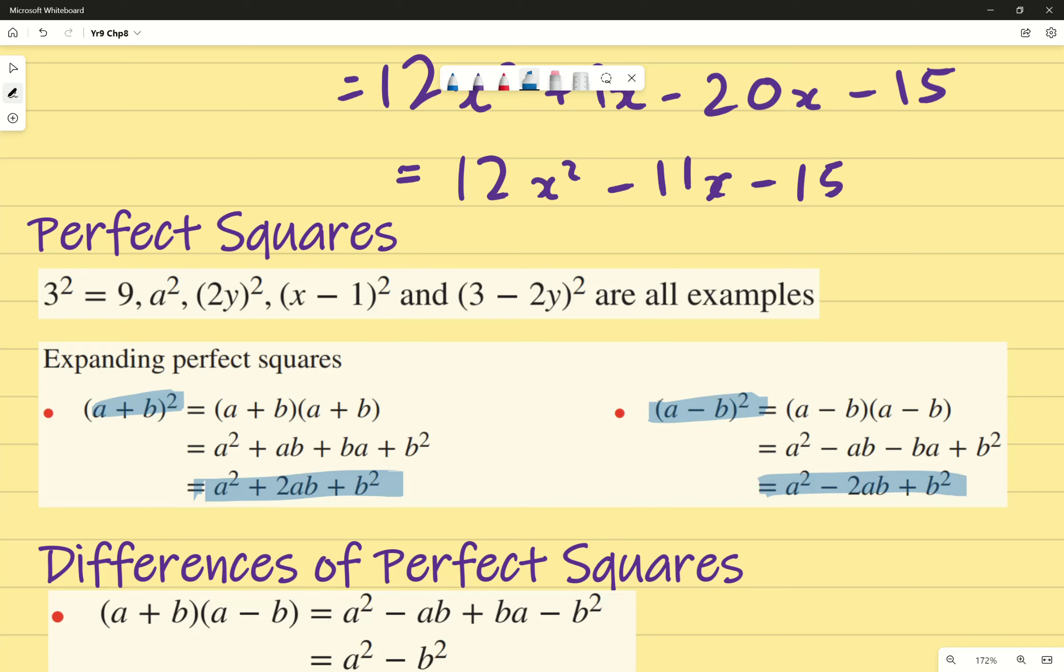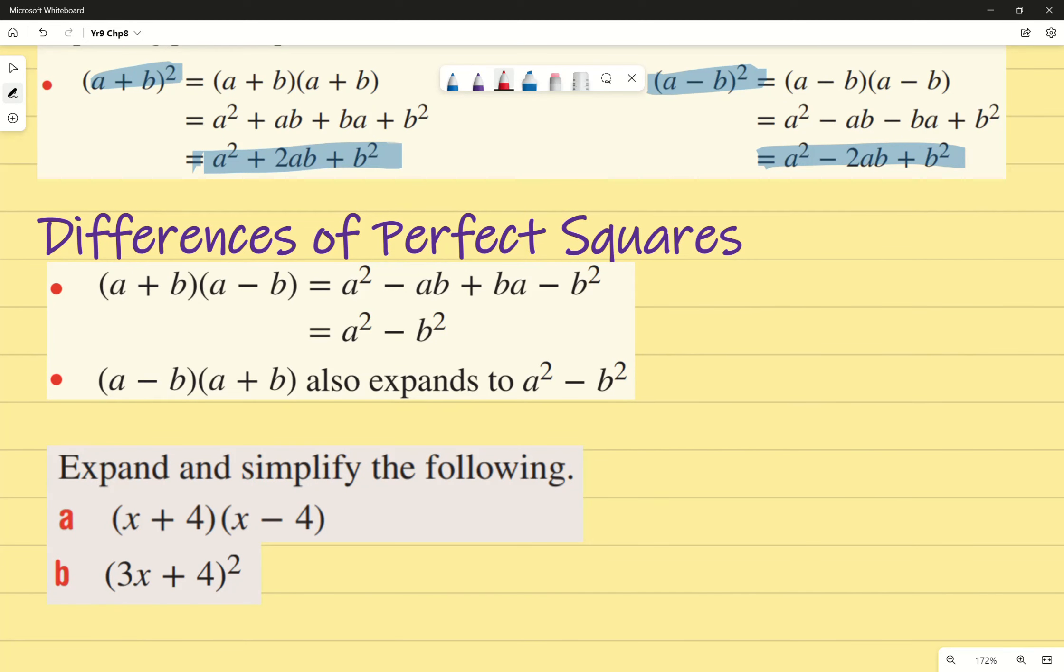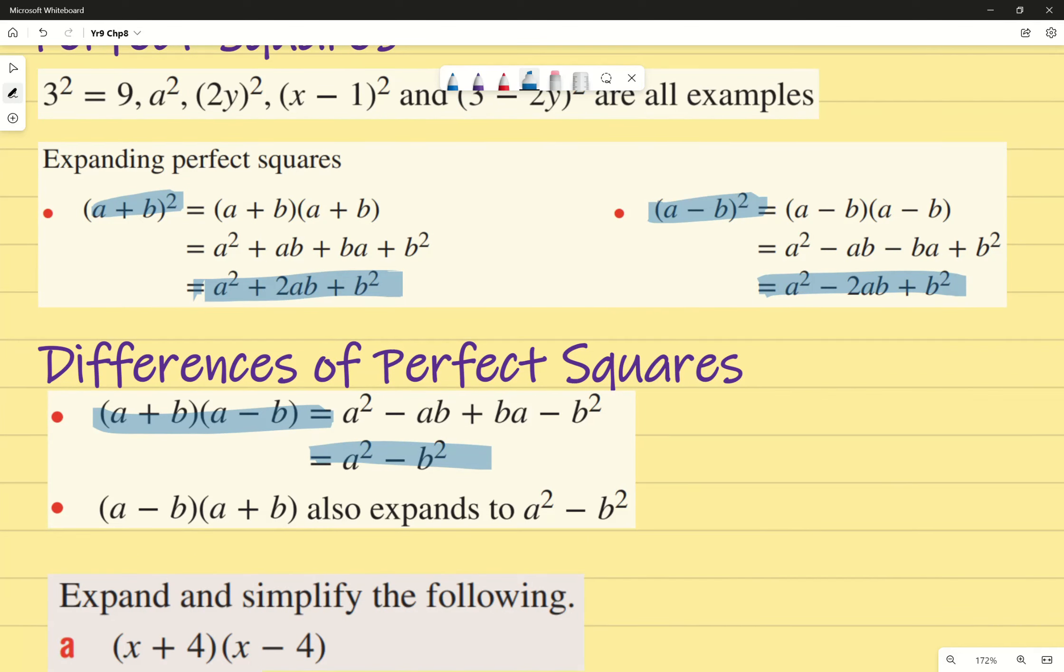The key point for this lesson is this component here: difference of perfect squares. It's in the name - it's a difference, which is subtraction, between two perfect squares. In this case it's a and b, a² - b², but it could be anything, could be (2x)² or 3², whatever it is. The formula is as follows: if we have (a + b)(a - b), we end up with a² - b². You'll note that the middle term gets cancelled out. If you want to do this expansion yourself, you can see that the -ab and the +ab cancel out, which is why you end up with only two terms in your answer.